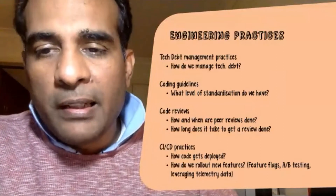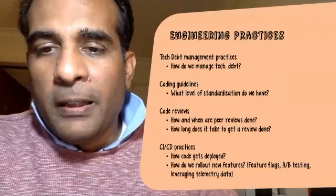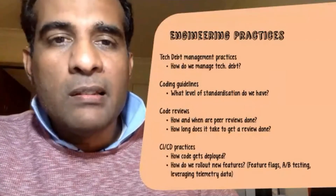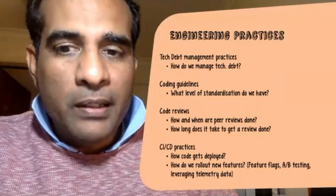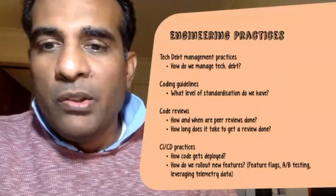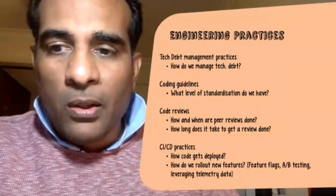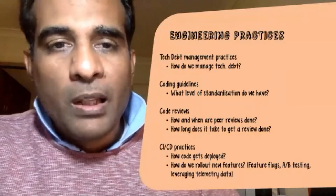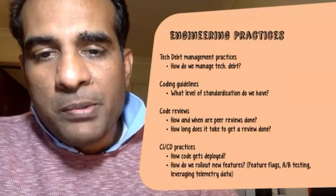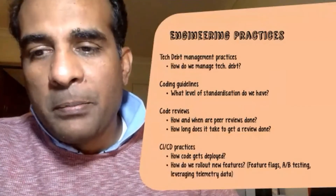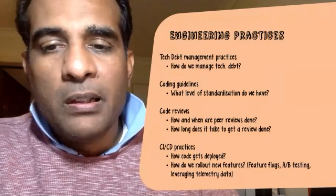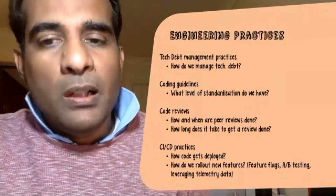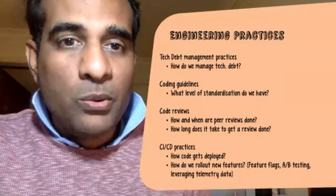Do you do things like continuous deployment? Even version control is an important factor in this. Do you use things like feature branching, or do you use trunk-based development? The state of DevOps report recommends trunk-based development to help you move to continuous deployment sooner.